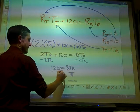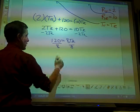I get 120 equals 8T_R. So I divide by 8 and I get T_R is 15.